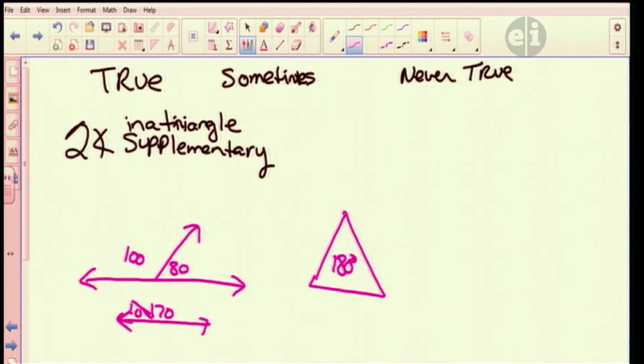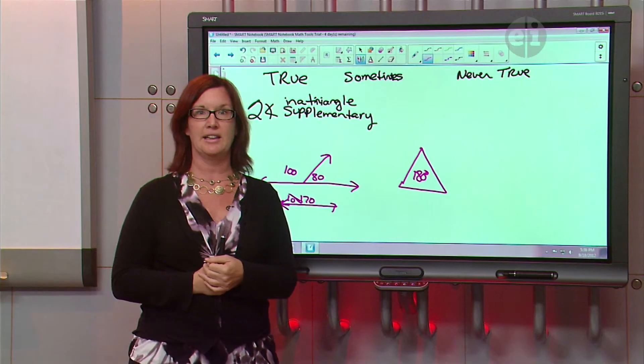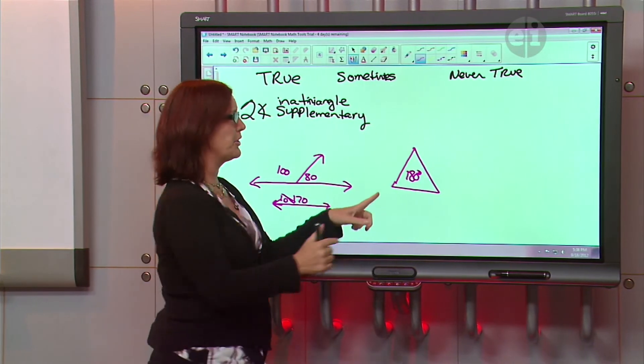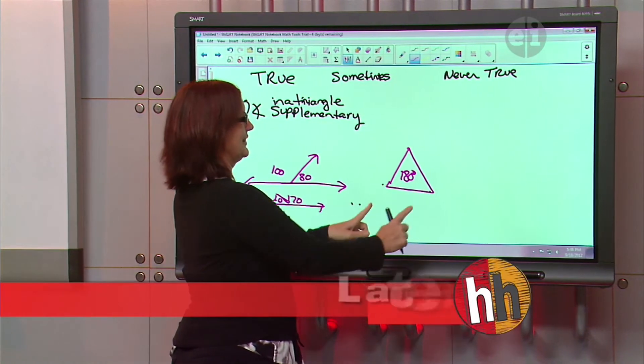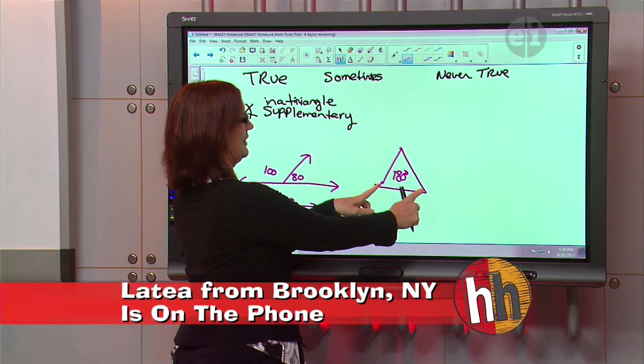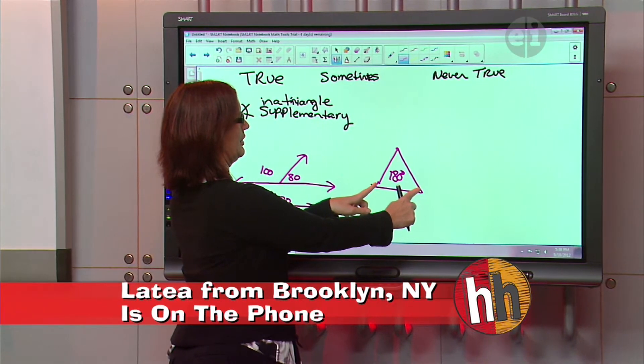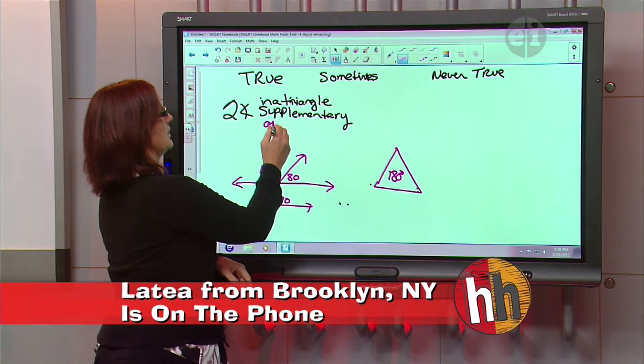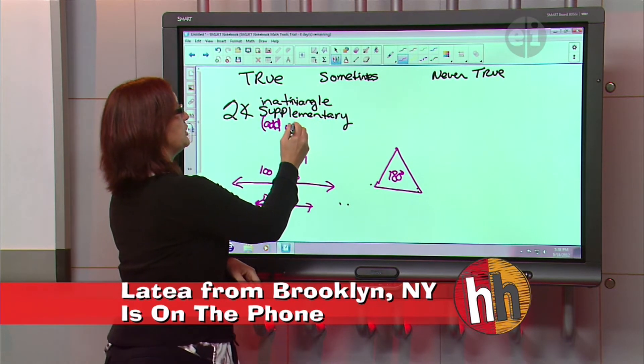Okay, so they're telling me that two of these angles are supplementary. So if two of these angles are supplementary, and even though I don't have any numbers to work with, what do I know these two angles would add up to? They'll add up to... What do we say supplementary angles add up to? 180 degrees. They add up to 180, right?